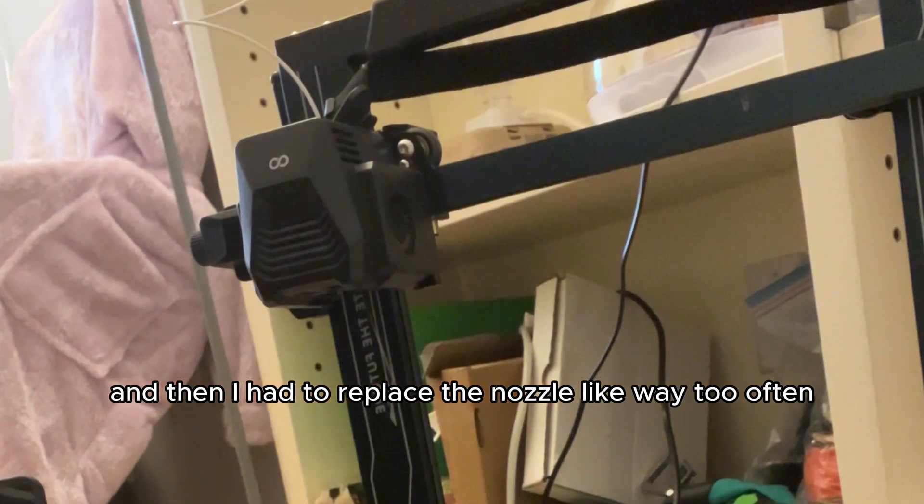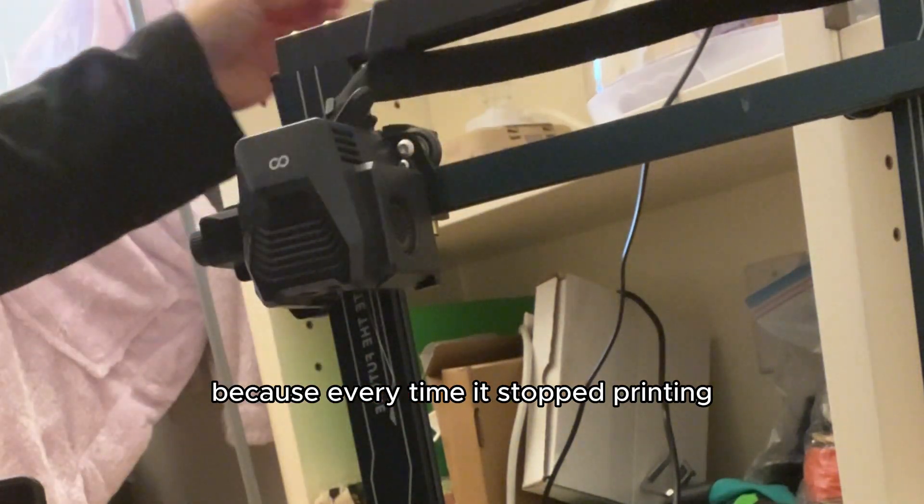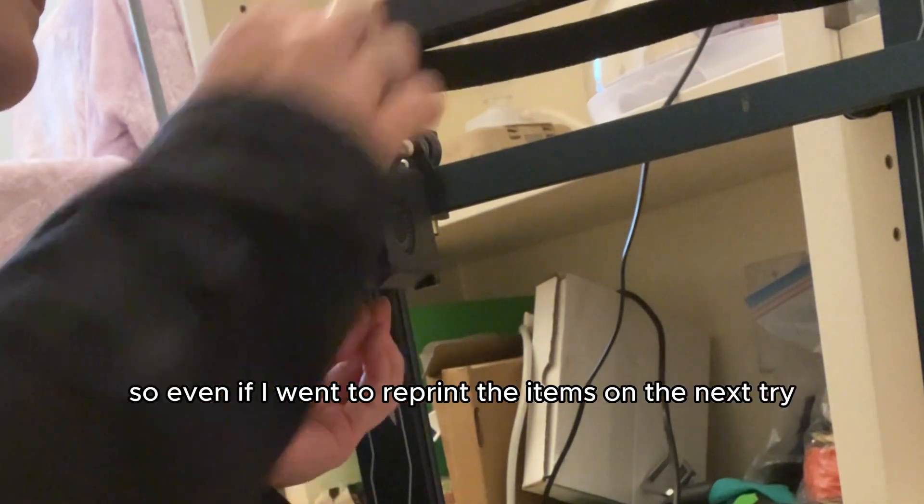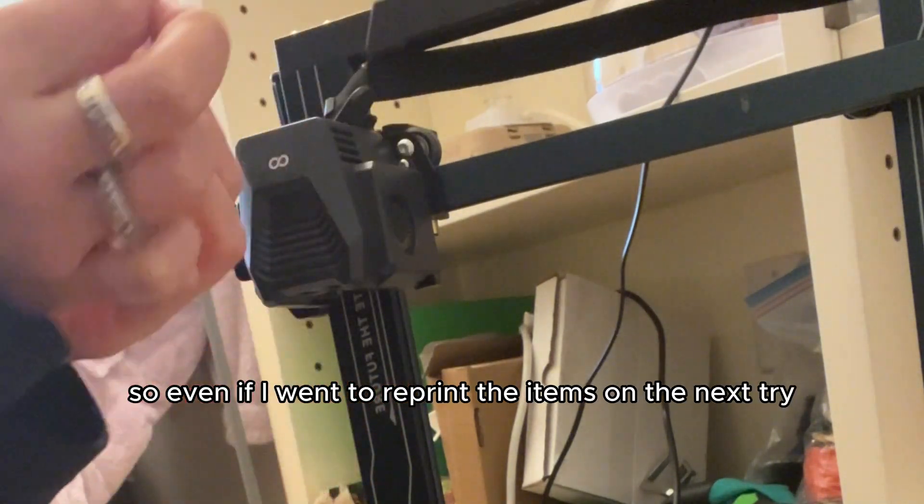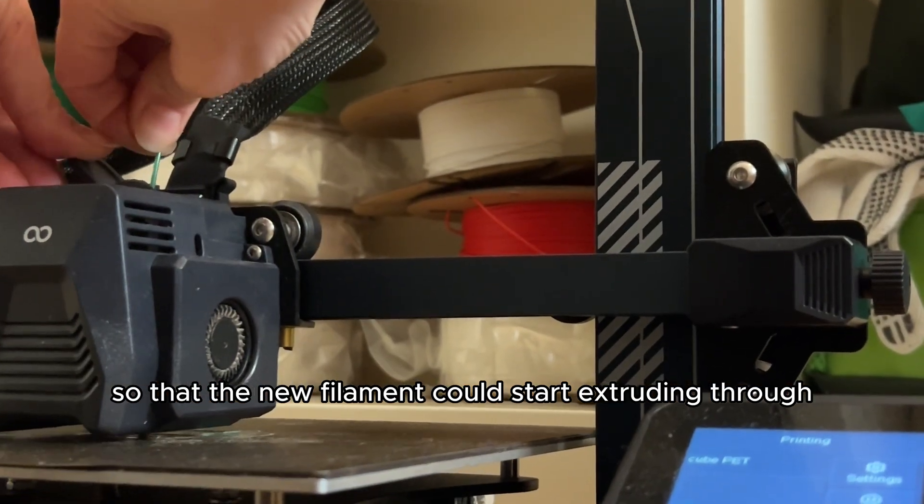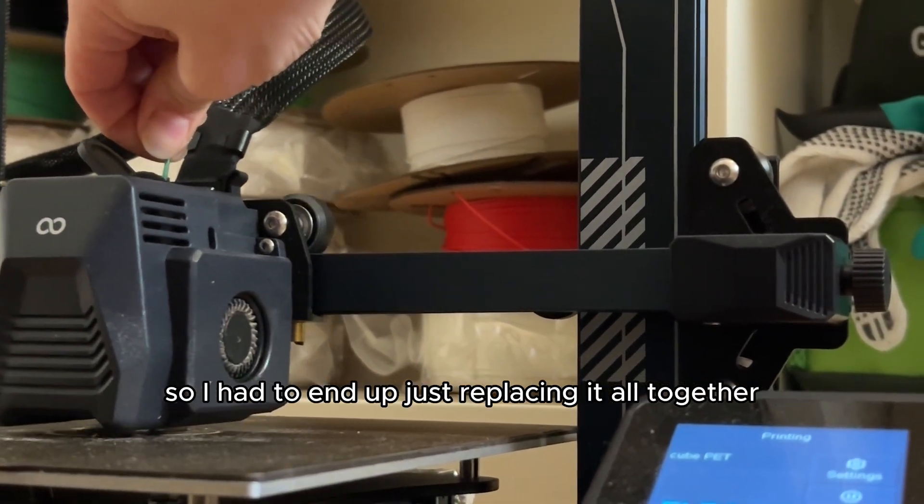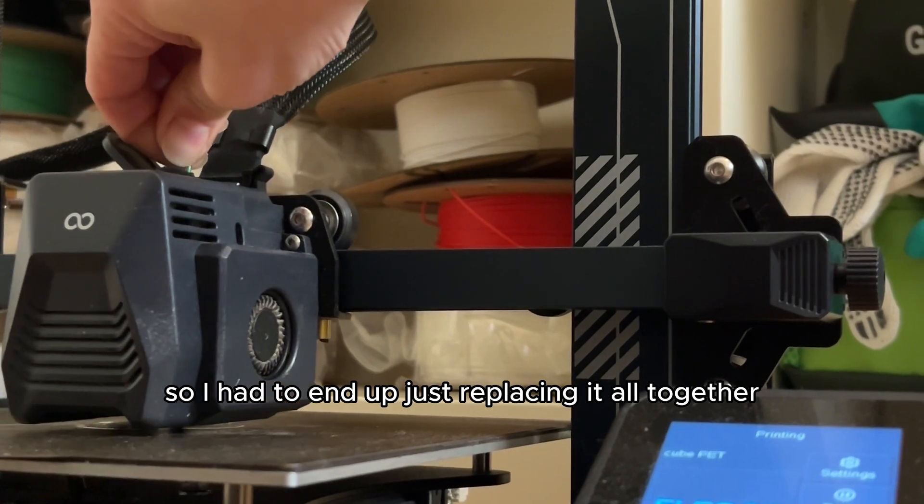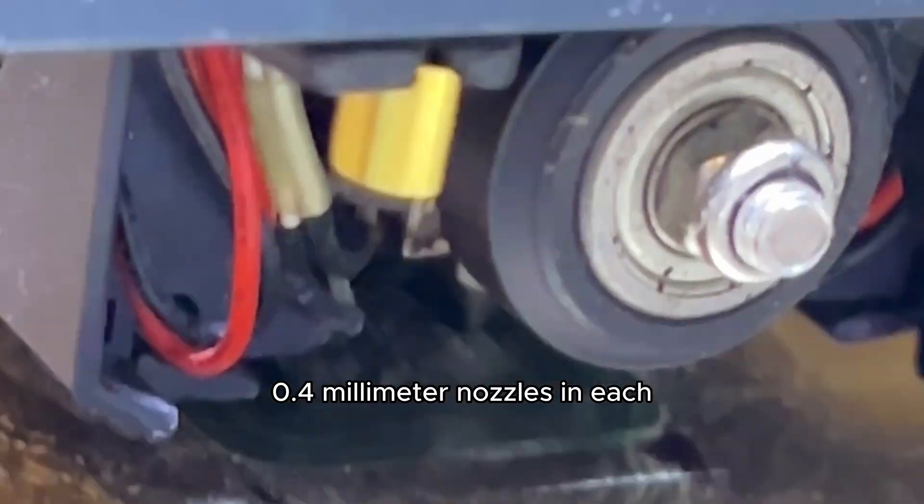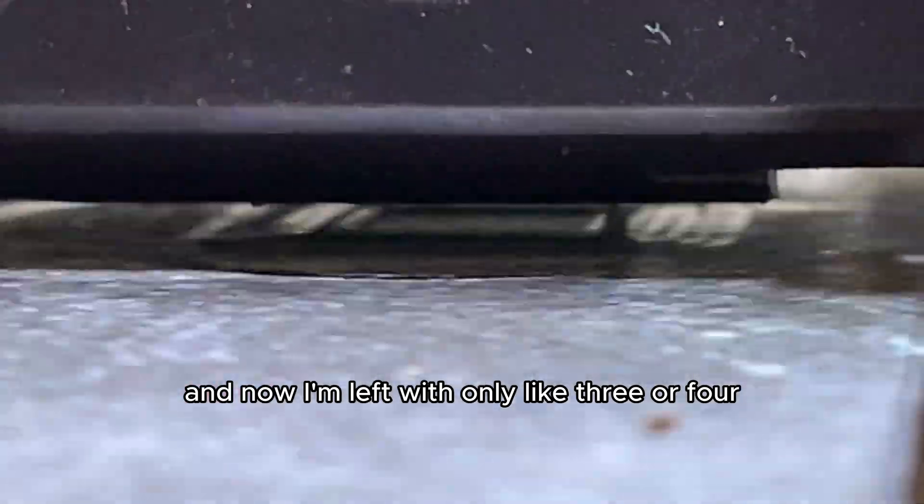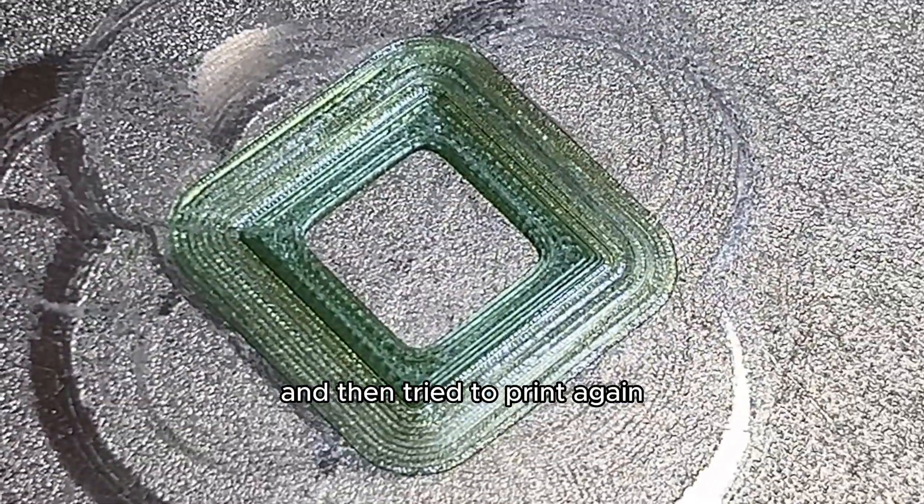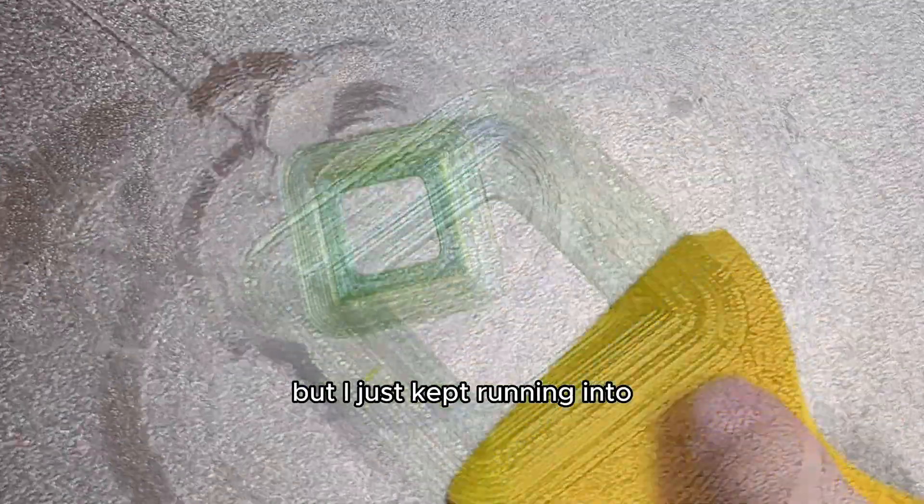Each time it stopped I had to clean the nozzle and clean the extruder from any melted plastic that got caught in between, and then I had to replace the nozzle like way too often because every time it stopped printing the water bottle filament just kept getting stuck inside of the nozzle. So even if I went to reprint the items on the next try the gunk that was blocking up the nozzle wouldn't melt so that the new filament could start extruding through, so I had to end up just replacing it all together. I had two big bags of 30 0.4 millimeter nozzles in each and now I'm left with only like three or four, so you can imagine how many times I changed the settings and then tried to print again.